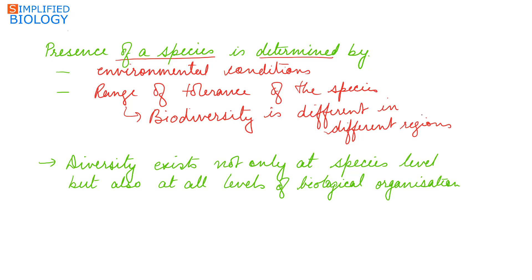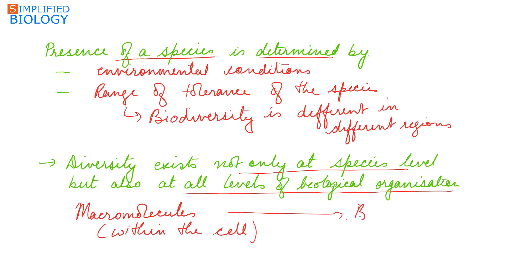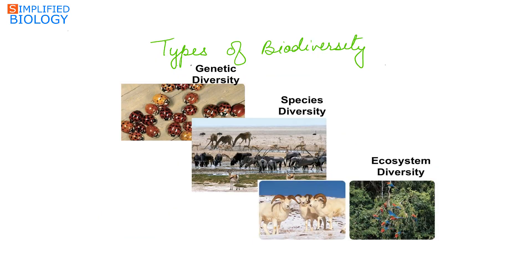Diversity exists not only at the species level but also at all levels of biological organization — from the macromolecules within the cell to the biomes. Biodiversity is of three types: genetic diversity, species diversity, and ecosystem or ecological diversity.